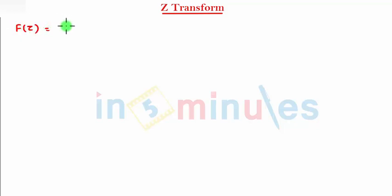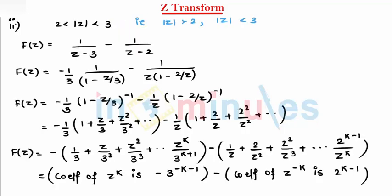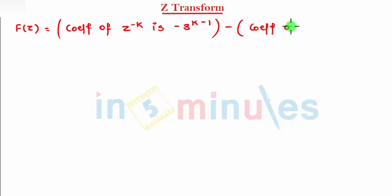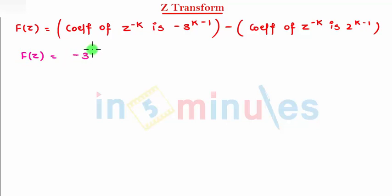f(z) is equal to the coefficient of z raised to minus k. I am interested in z raised to minus k, so it is minus 3 raised to k minus 1. Just change the sign of k. The coefficient of z raised to minus k, which we can write directly as 2 raised to k minus 1. So finally, I get f(z) as minus 3^(k-1) minus 2^(k-1). So that's my answer.